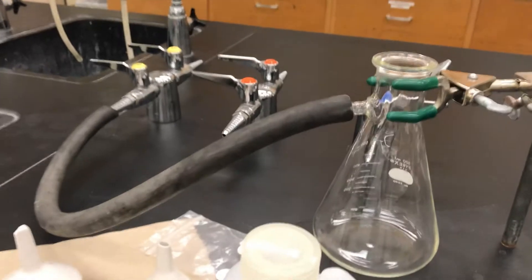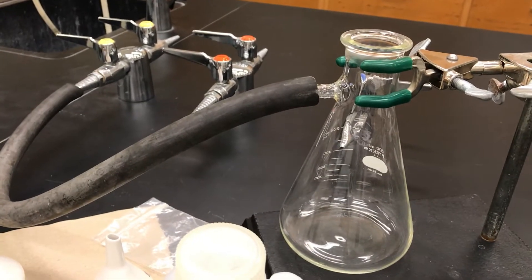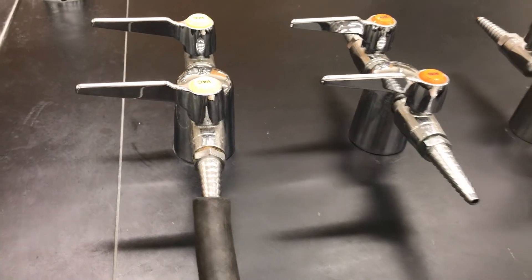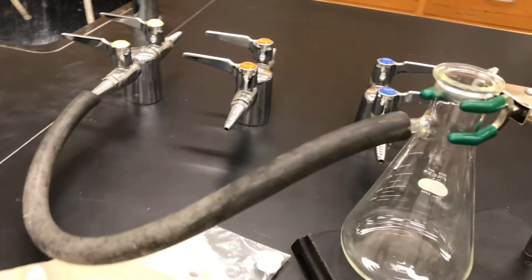So let's first set up our filtration flask. We can connect that to a ring stand and then use some thick rubber tubing to connect the side arm to the house vacuum.